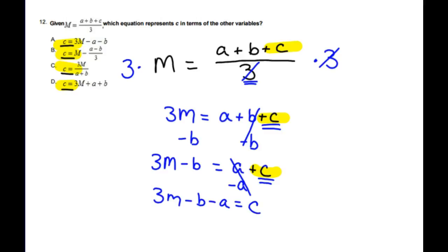Then I look at my answer choices. Oh, and by the way, I'm going yay, because I've got C isolated, and it's done. So I'm looking for the answer choice that looks most like 3M minus B minus A. And I can confidently choose A because all they did was rearrange this. It's exactly the same. 3M minus B minus A is the same as 3M minus A minus B.